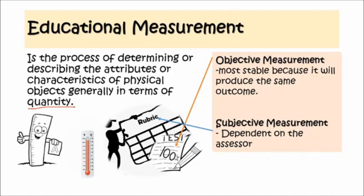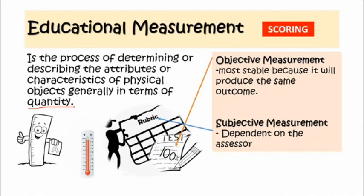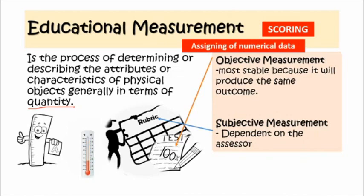However, there are areas that cannot be covered by objective measurement, so we have subjective measurement — that is perception — wherein the measurement depends on the assessor himself. One example of subjective measurement is a student's performance in a drama, wherein the rating will depend on the person who rates the performance, meaning the rating will vary from one person to another depending on their perception. That's why when doing subjective measurement, it is really advised to use a rubric as the basis for grading. Educational measurement is essentially the scoring system — the assigning of quantitative or numerical data to the characteristics or attributes of students.